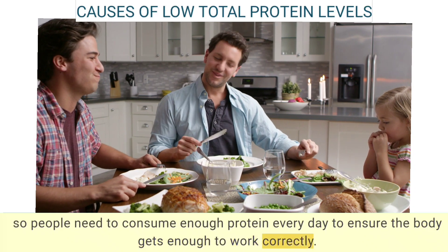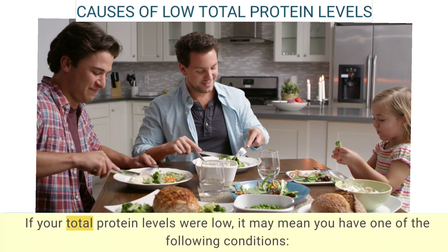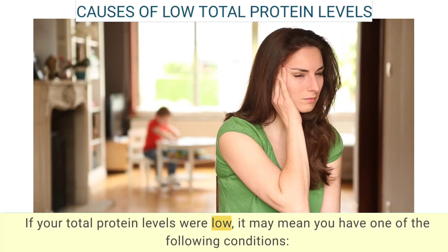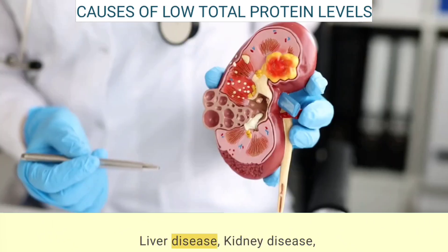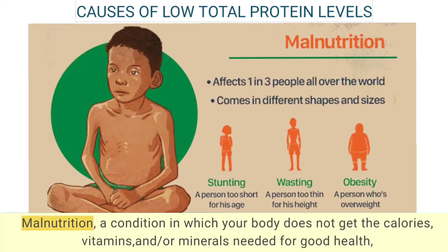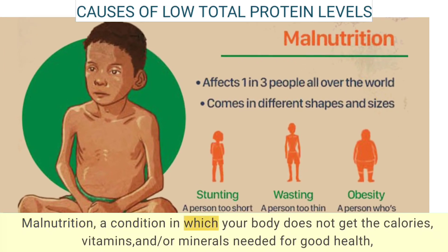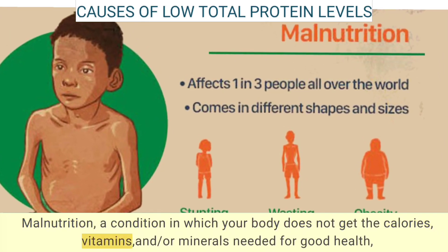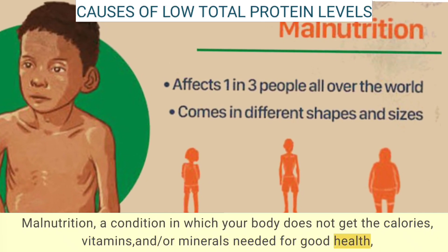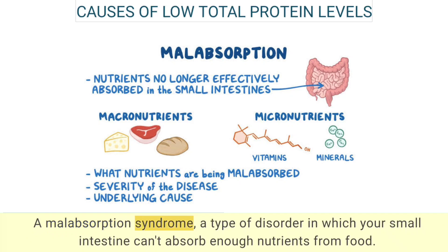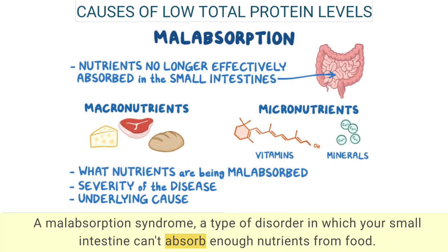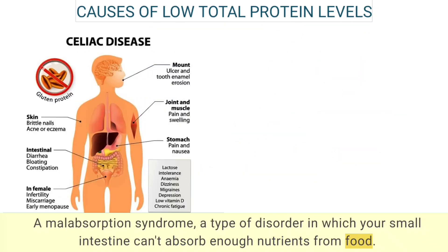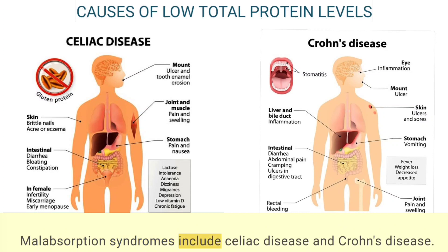The body cannot store protein long term, so people need to consume enough protein every day. If your total protein levels are low, it may indicate liver disease, kidney disease, malnutrition — a condition where the body lacks needed calories, vitamins, or minerals — or a malabsorption syndrome, such as celiac disease or Crohn's disease, where the small intestine cannot absorb enough nutrients from food.